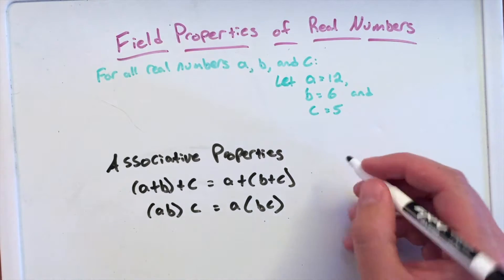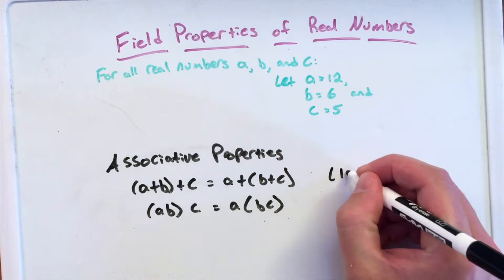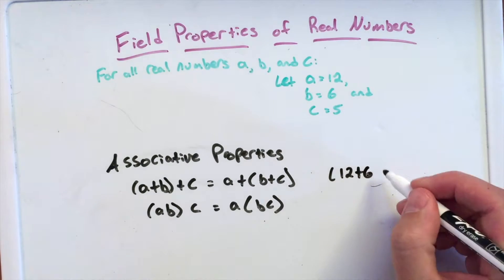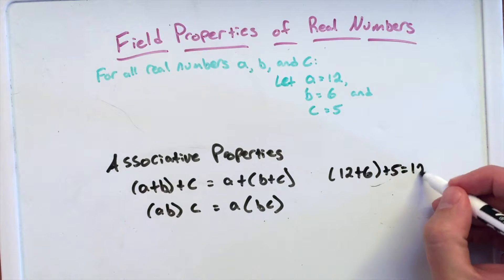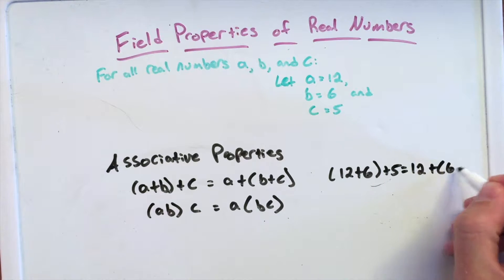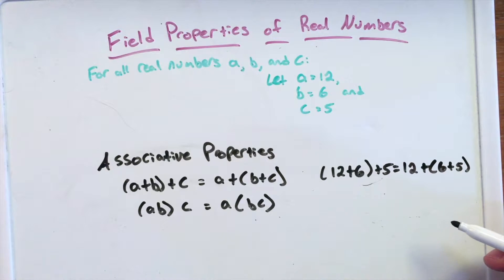If we add them here together, we have (12+6) for A and B plus 5, is the same thing as 12+(6+5). These add up to the same thing.